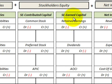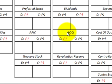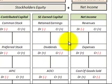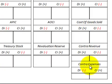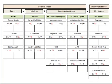Going over to earned capital — all under stockholders equity — you've got retained earnings, dividends, other comprehensive income, and the revaluation reserve. Moving over to net income, we have revenues, expenses, cost of goods sold, contra revenues, and contra expenses.